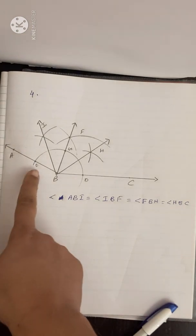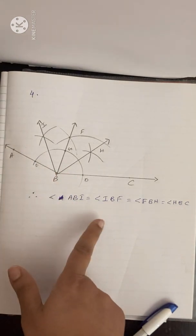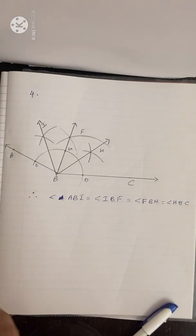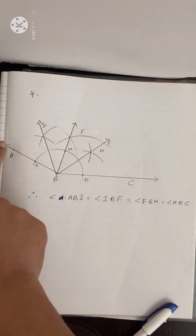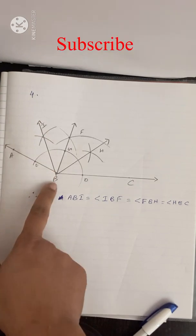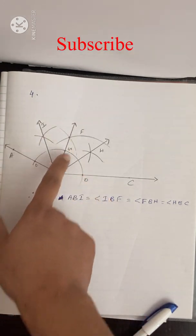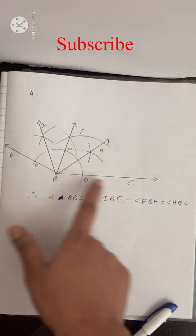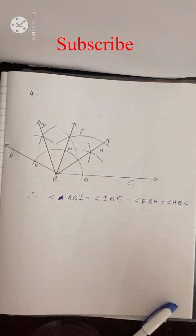Therefore, the four angles are equal: angle ABI equals angle IBF equals angle FBH equals angle HBC. That's all for today. Thank you.